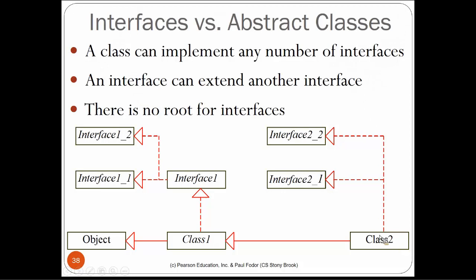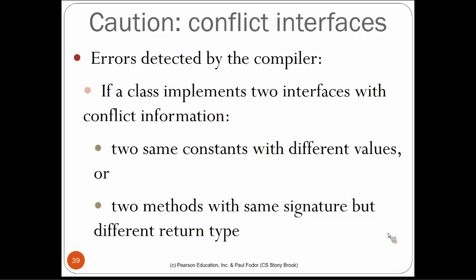An instance of a class also implements all interfaces it or its superclasses implement. A problem arises if two interfaces define the same constant name with different values — implementing both causes a compiler error. Similarly, implementing two interfaces with the same method signature but different return types is a compiler error.